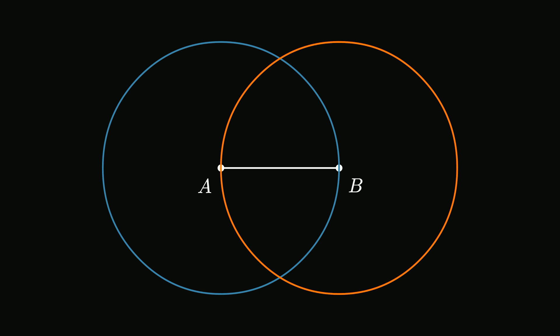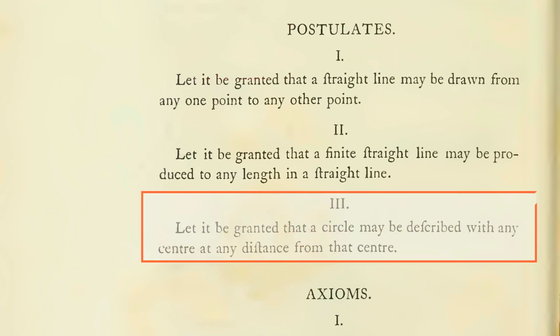Euclid begins his proof by drawing two circles, one at each end of the given line segment, each with a radius equal to the segment's length. Euclid's postulate 3 allows him to draw circles with any center and radius.